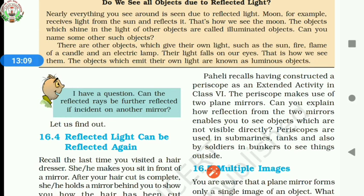For making a periscope, we use two plane mirrors. Here also, we are using the property of multiple reflection of light. Periscopes are used in submarines, tanks, and also by soldiers in bunkers to see things outside. In periscopes, we are using the property of multiple reflection of light. Light can be reflected again and again — that is called multiple reflection of light.